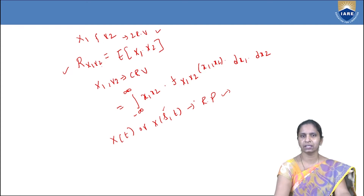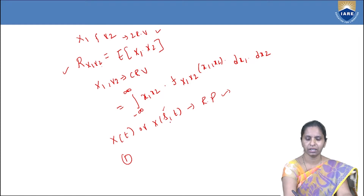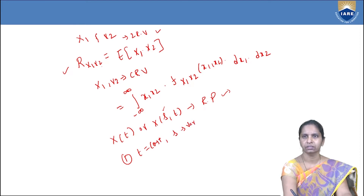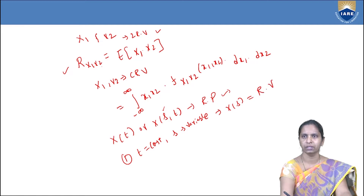When we defined the random process, we observed three conditions. The first condition: when the time t is constant and s is variable in the random process x(s,t), then it is a function of only the sample space elements, and it is called a random variable.